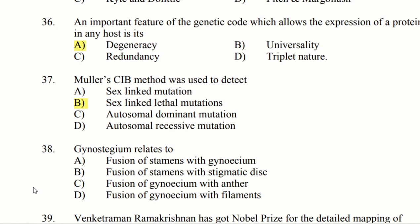Question 38: Gynostecium is related to. Option A: fusion of stamen with the gynecium. Option B: fusion of stamen with the stigmatic disc. Option C: fusion of gynecium with the anther. Option D: fusion of gynecium with filament. The answer is option A, fusion of stamen with the gynecium.